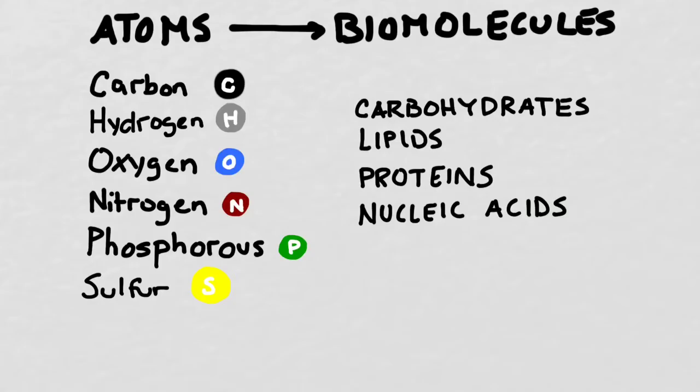So when we talked about carbohydrates and lipids we mostly used carbon, hydrogen, oxygen, and nitrogen, but today we're going to add phosphorus and sulfur into the mix as we create our two other kinds of biomolecules.